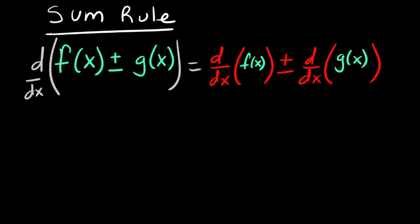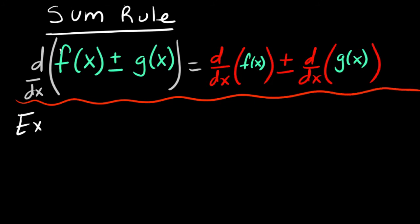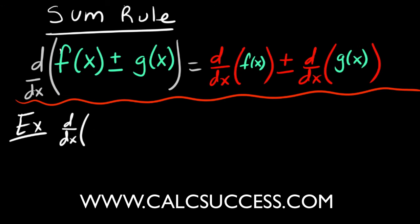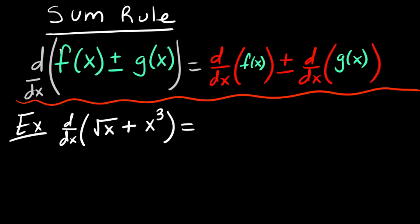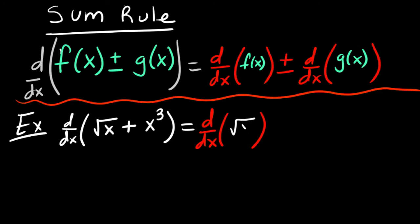Let's put this to use. Let's say you want to find the derivative of the square root of x plus x to the third. The sum rule tells us that we can split this sum up into the derivative of the square root of x, the first function, and then plus the derivative of the second function, which is x to the third.